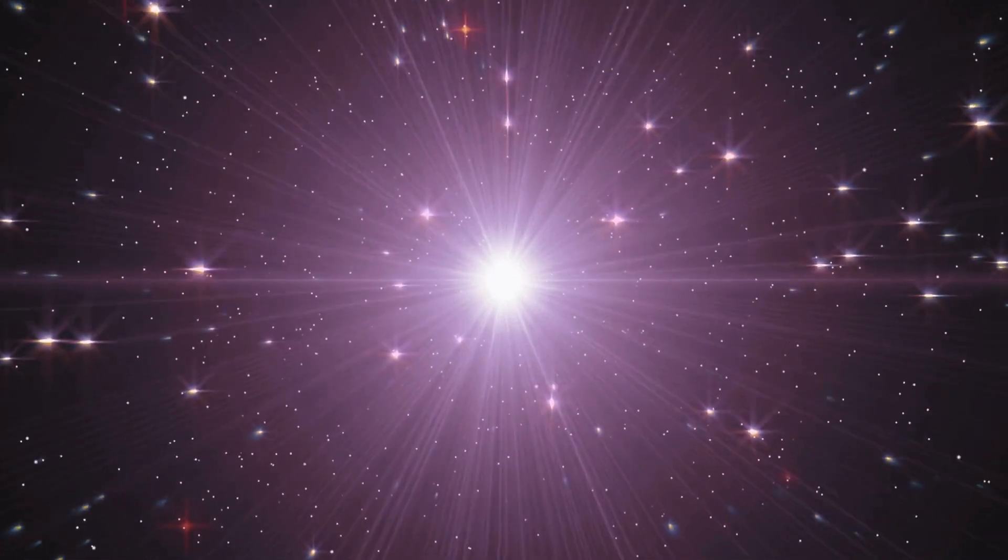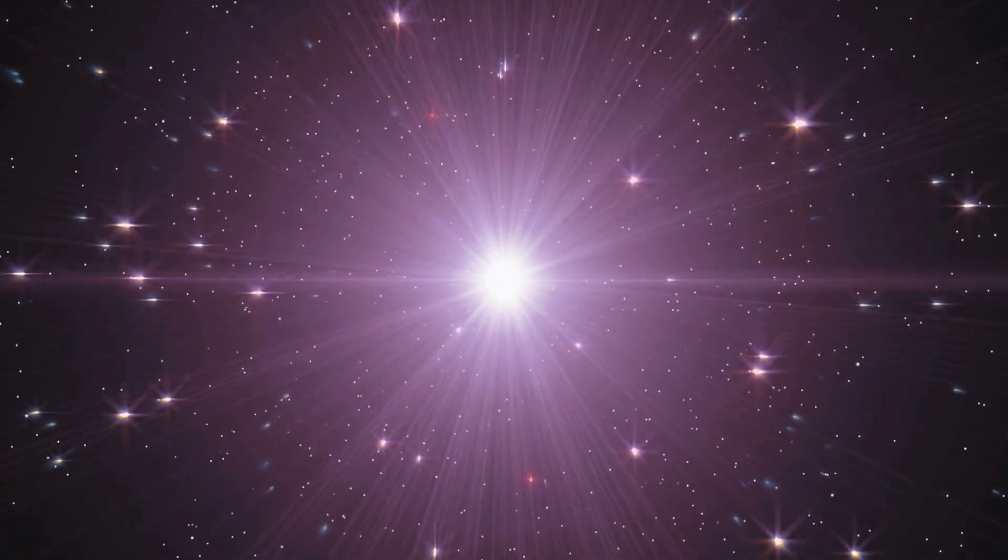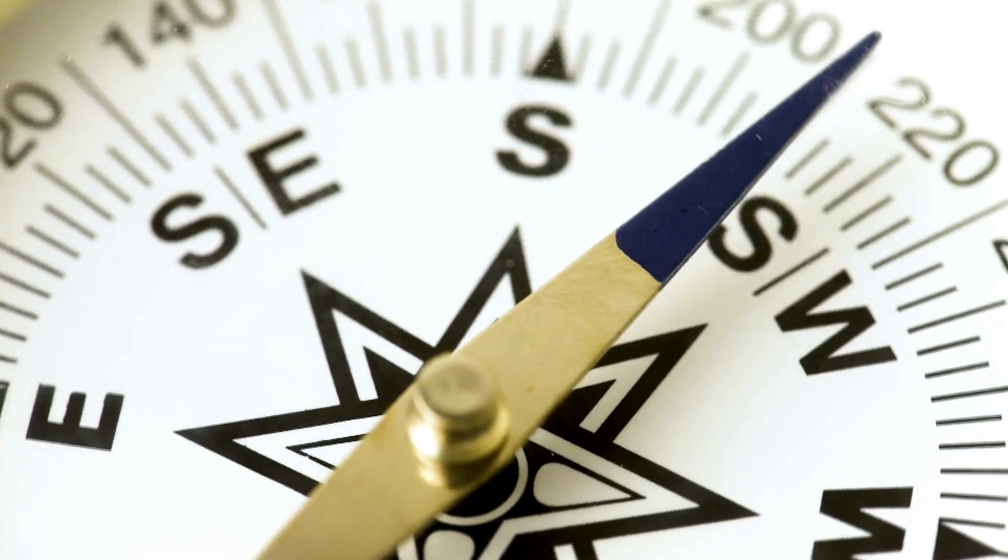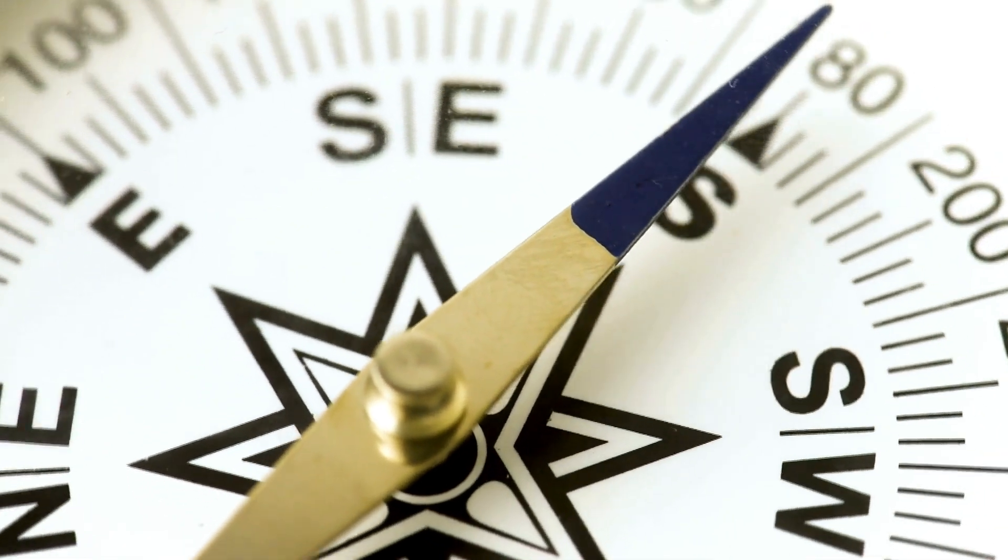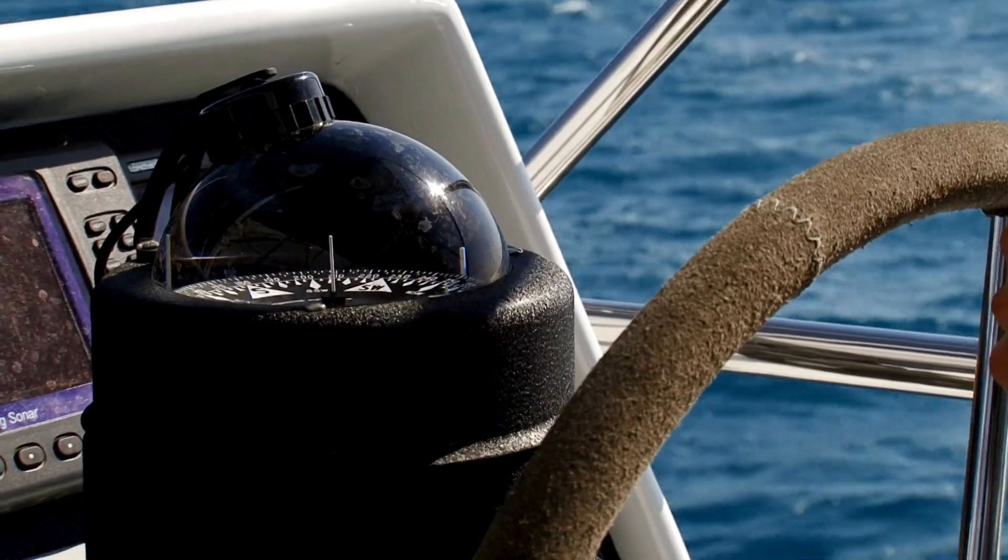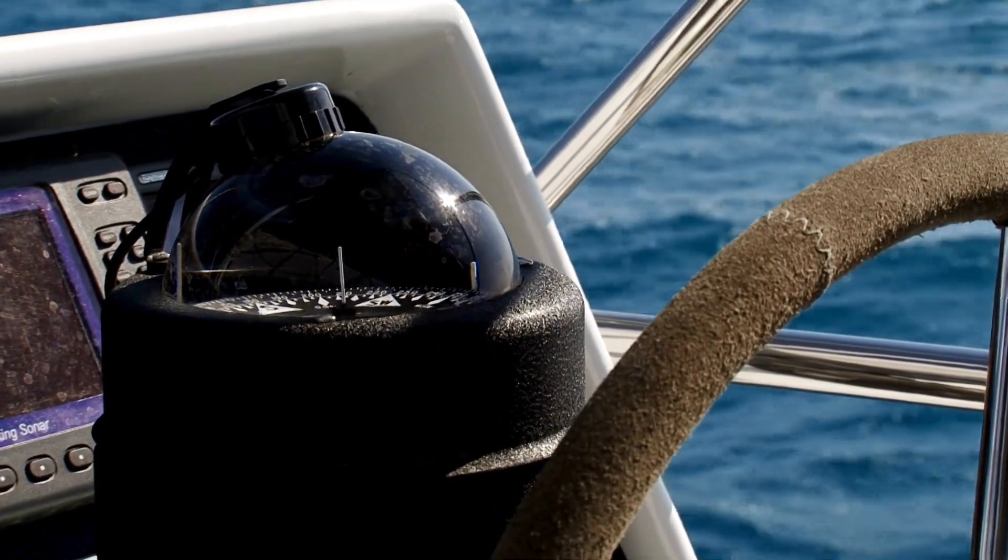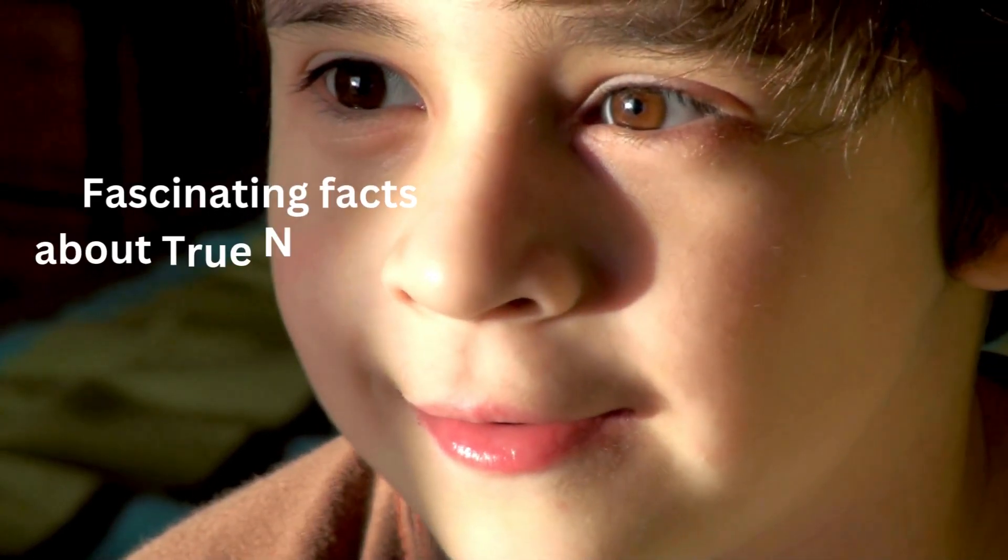Magnetic north was identified much later. The first known use of a magnetic compass dates back to the 11th century in China. By the 13th century, it had spread to Europe revolutionizing navigation at sea. Now, let's explore seven fascinating facts about true north and magnetic north.